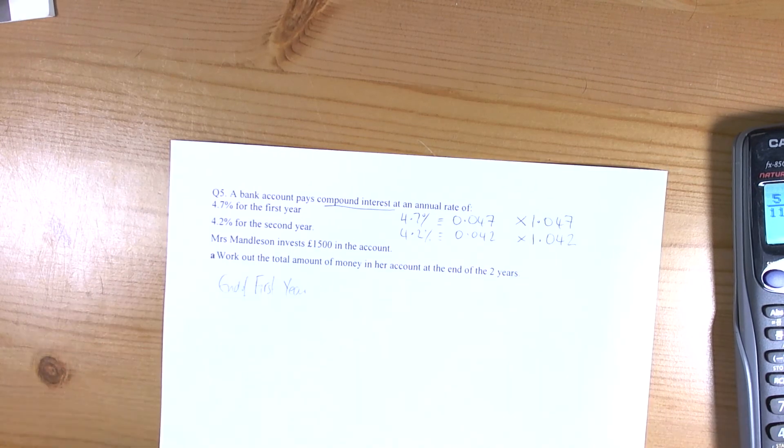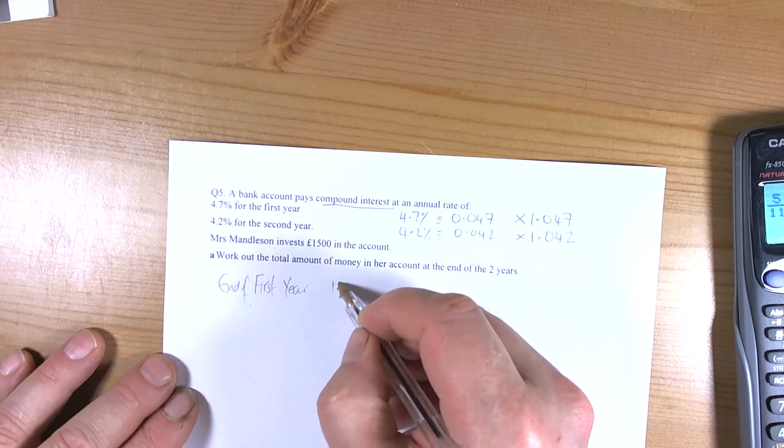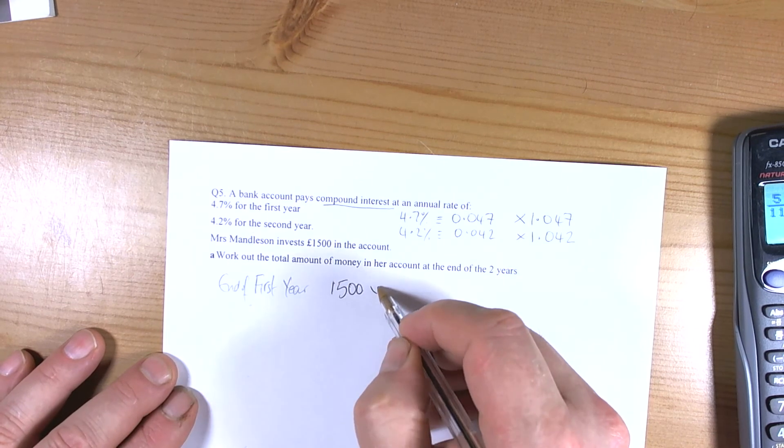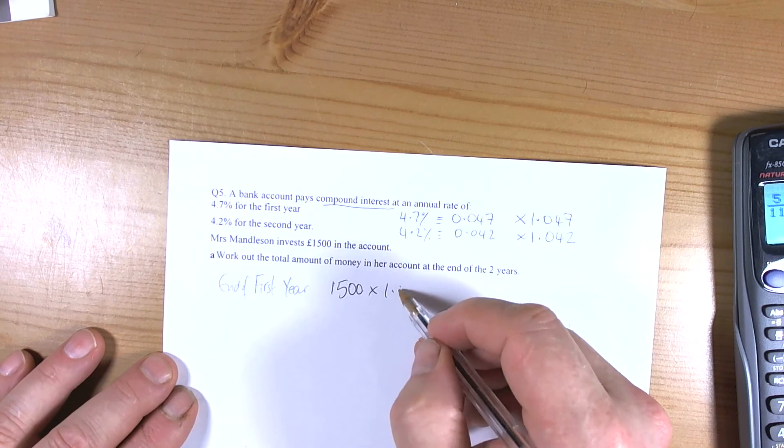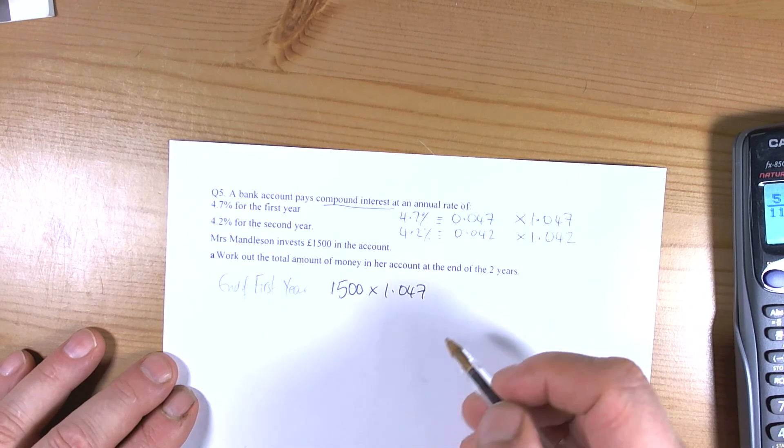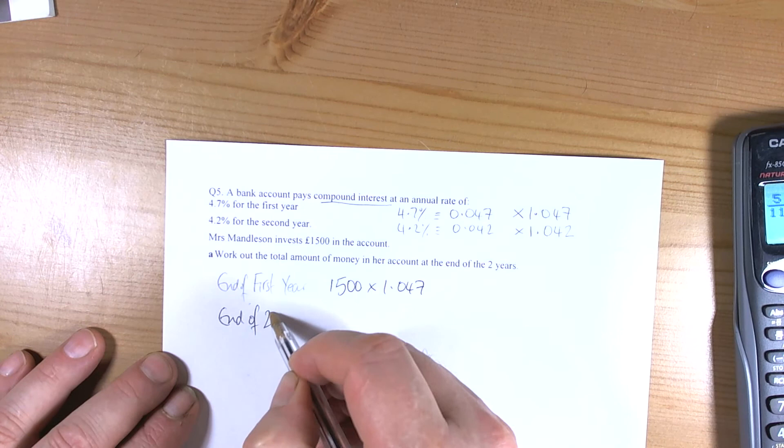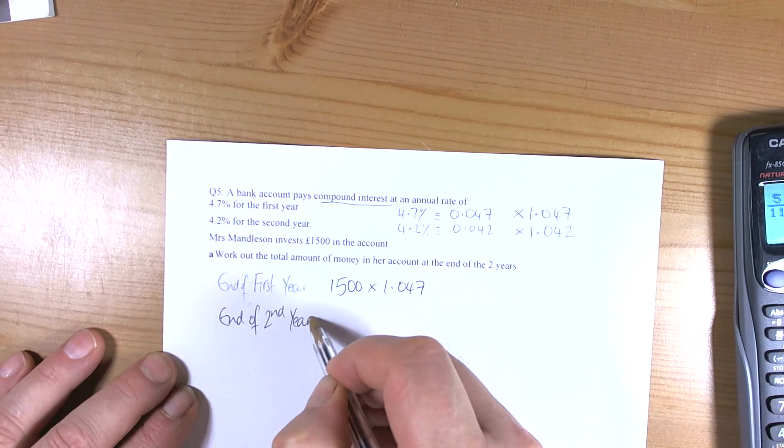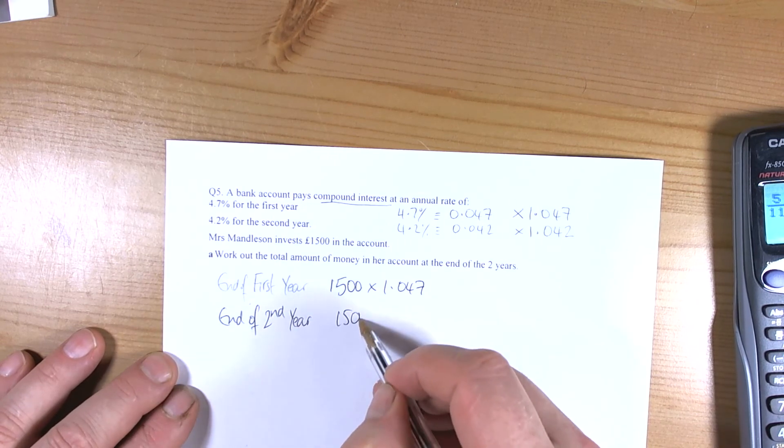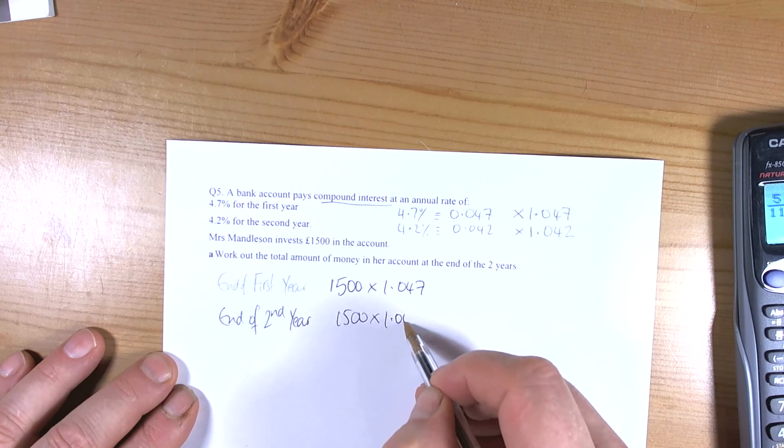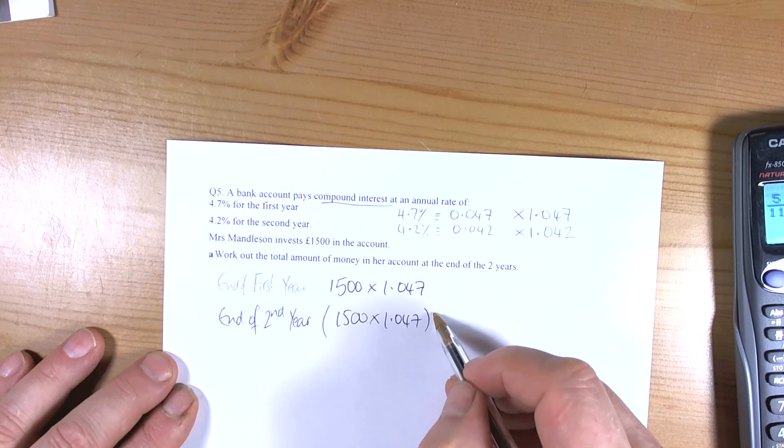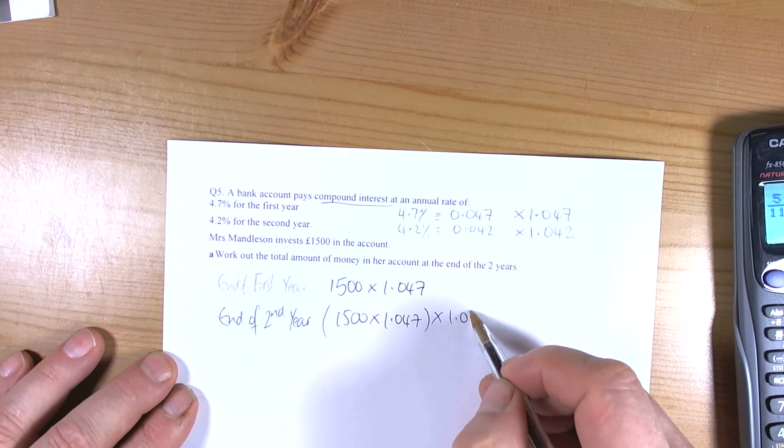We're going to have the 1,500 pounds that we originally invested times 1.047 times 1.047.